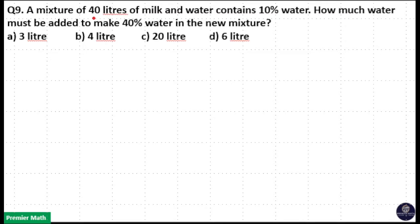A mixture of 40 liters of milk and water contains 10% water. How much water must be added to make 40% water in the new mixture?